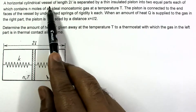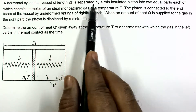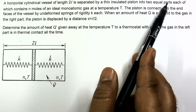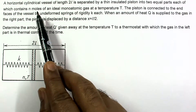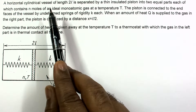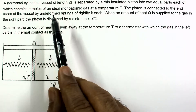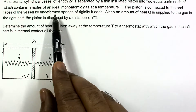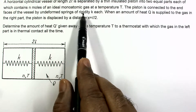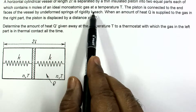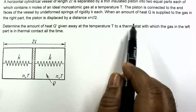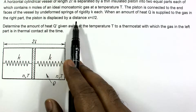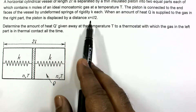In this problem, a horizontal cylindrical vessel of length 2L is separated by a thin insulated piston into two equal parts, each of which contains one mole of an ideal monatomic gas at temperature T. The piston is connected to the end faces of the vessel by undeformed springs of spring constant K each. When an amount of heat Q is supplied to the gas in the right part, the piston is displaced by a distance x equal to L/2.